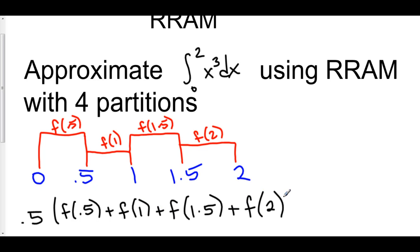Now, f of 0.5, that's 1 half cubed, that's 1 eighth. f of 1 is 1 cubed, which is 1. f of 1.5 is 3 over 2 cubed, which is 27 over 8. And f of 2 is 2 cubed, which is just 8. And when you do all of this out, what you get is 6.25.